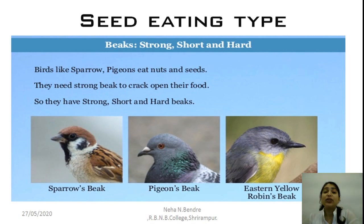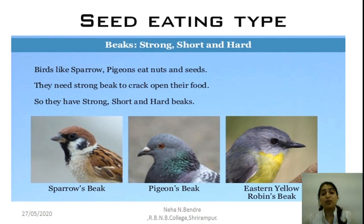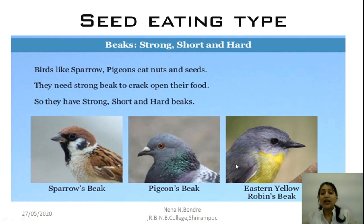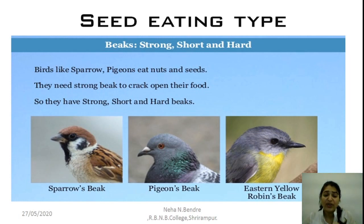The seed eating type of beak is for birds which have the habit of eating seeds. These are called granivorous birds, which feed on grains and different kinds of seeds. They have a strong, short, and hard type of beak. Birds like sparrows, pigeons, and the eastern yellow robin have a short beak which is conical in shape, used to cut and slice the grain into small pieces.